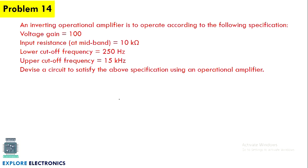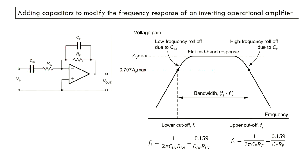The next problem is on an operational amplifier where voltage gain, input resistance, lower cutoff frequency, and upper cutoff frequency are given. We need to devise a circuit to satisfy these specifications using an op-amp. Adding capacitors Cin and Cf to the inverting amplifier circuit allows modification of the frequency response.